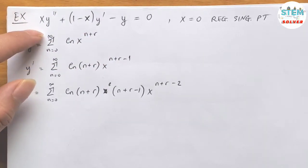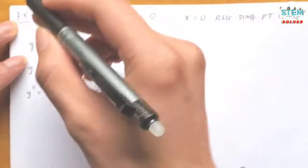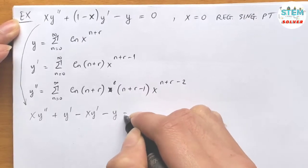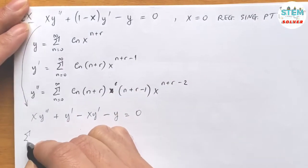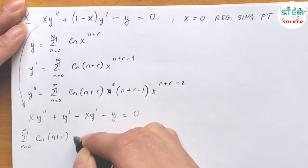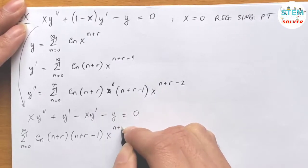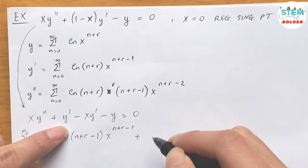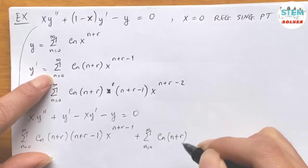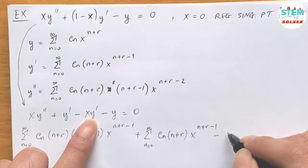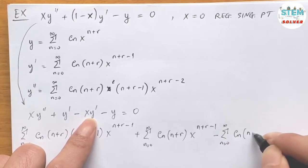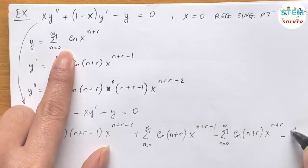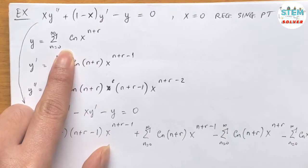Now we are going to plug this into the differential equation: x·y double prime plus y prime minus x·y prime minus y equals 0. Substituting, we get: the power series of c_n·(n+r)·(n+r−1)·x to the n+r−1 — from x times x to the n+r−2 — plus the power series of c_n·(n+r)·x to the n+r−1, minus the power series of c_n·(n+r)·x to the n+r, minus the power series of c_n·x to the n+r, equals 0.